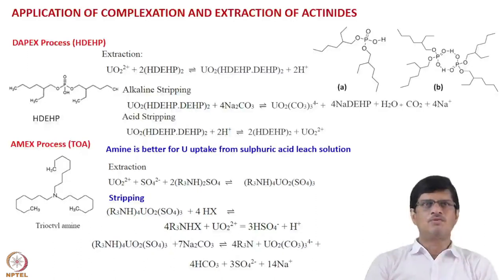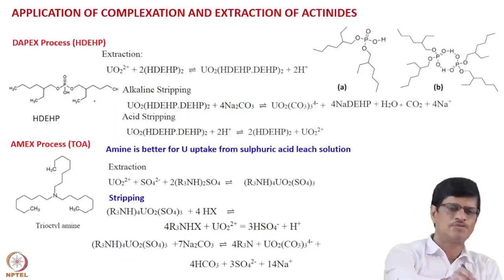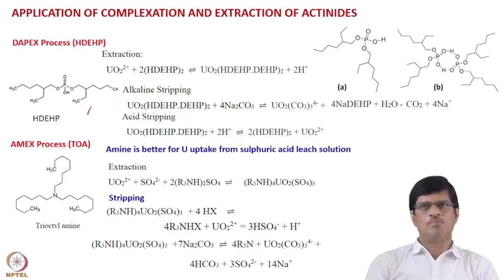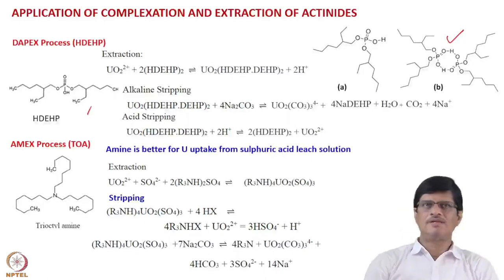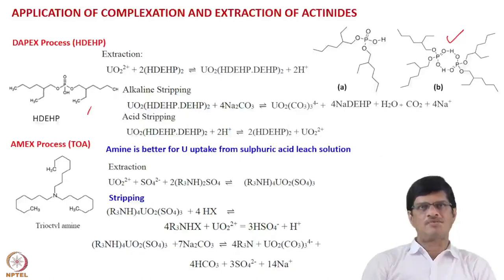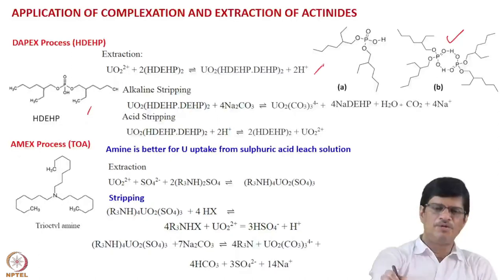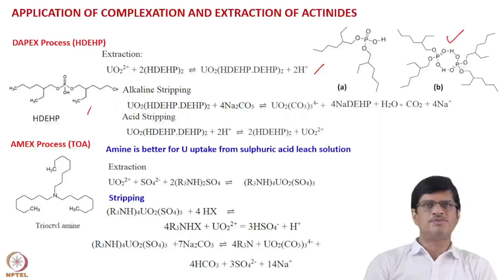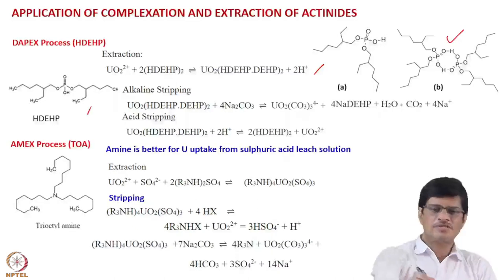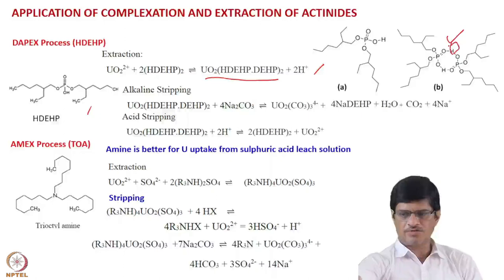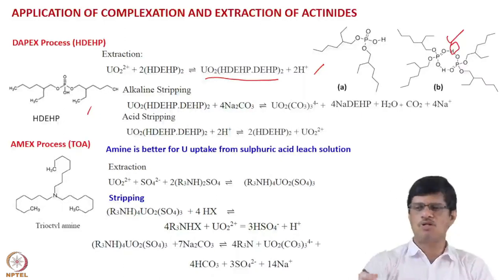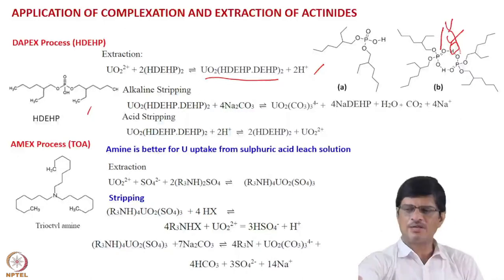The DAPEX process (dialkyl phosphoric acid extraction) uses the extractant HDEHP. In non-polar diluents HDEHP forms a dimer, and the extraction equilibrium is written with two units of the dimer. UO2²⁺ plus 2 units of the HDEHP dimer gives the extracted product UO2(HDEHP·DEHP)2, where the hydrogen ion is replaced and a chelate complex forms. The extracted species can be stripped to give the uranium product by acid stripping using different acids or by alkaline stripping using sodium carbonate to give uranium carbonate.